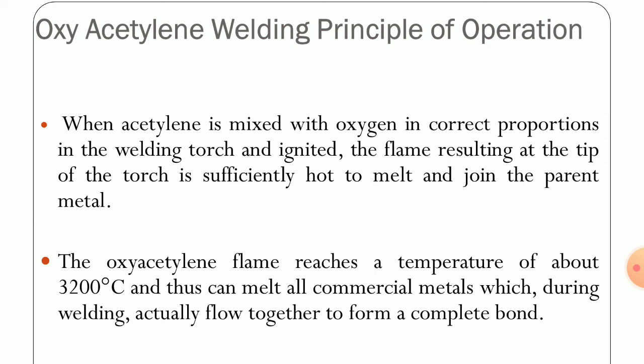The oxy-acetylene flame reaches a temperature of about 3200°C and can thus melt all commercial metals, which during welding flow together to form a complete bond. The melting point temperature of iron is 1539°C, so we can observe that we can melt any type of material. As the definition of welding depicts, this is a process through which we can achieve a uniform material and make any material intact.